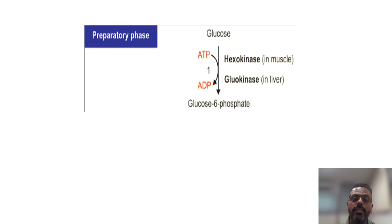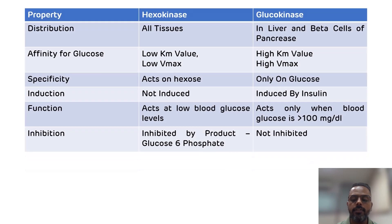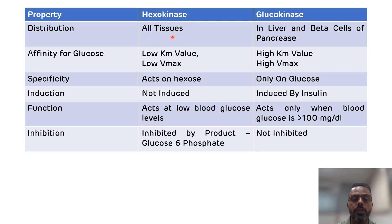Now we will see the differences between these two enzymes. The first difference is related to distribution. Hexokinase is located in all tissues, where it converts glucose into glucose-6-phosphate. While glucokinase is specifically located in the liver as well as in the beta cells of the pancreas.